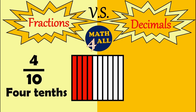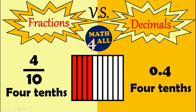It's so easy — we'll just write zero point four. It means this number is less than one and greater than zero. As you can see, four over ten is the same as zero point four, and if you are going to read it, you will read it as four tenths, the same as the fraction.